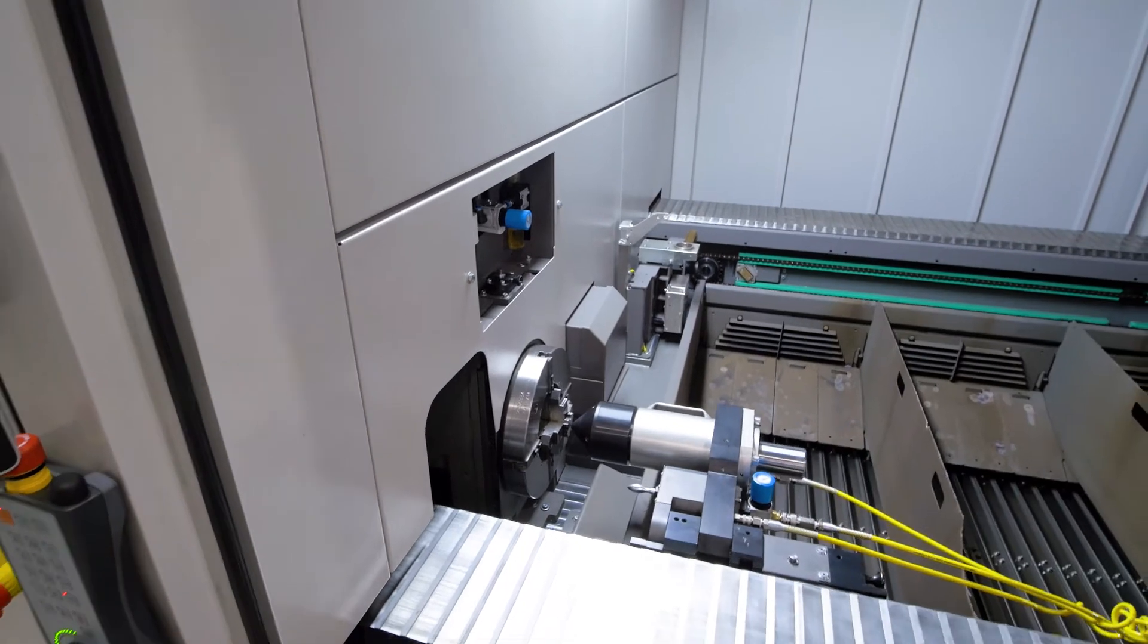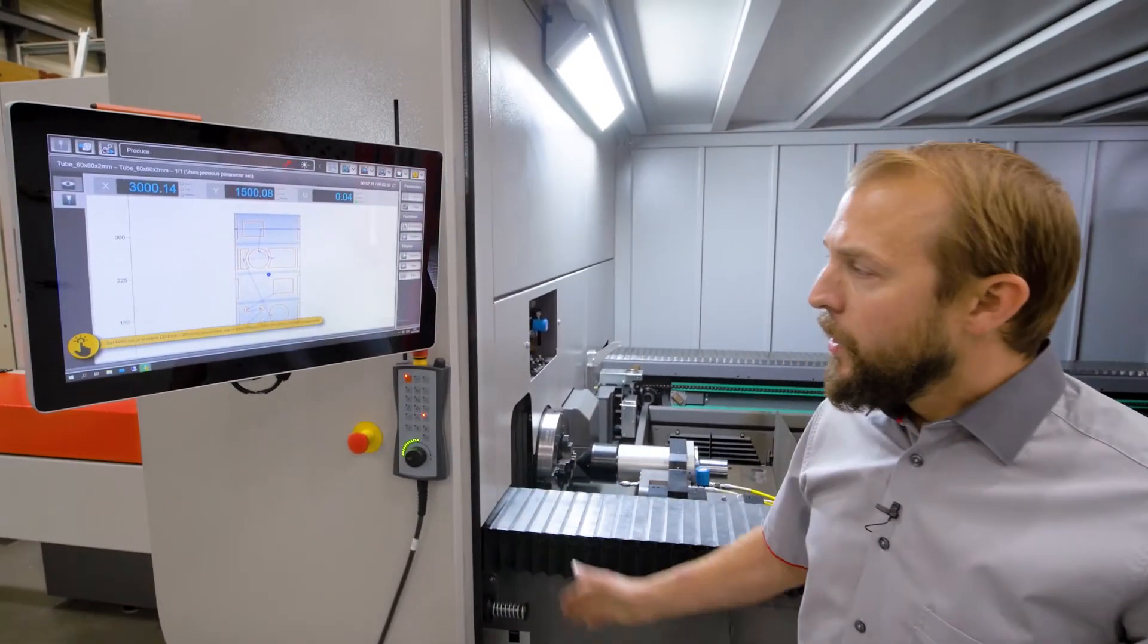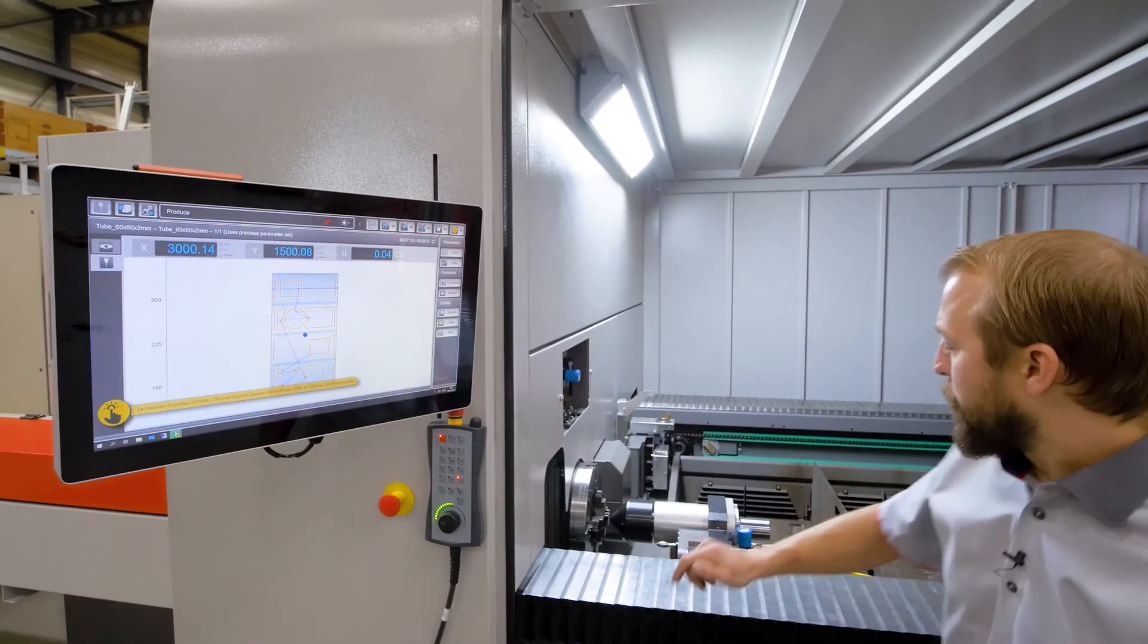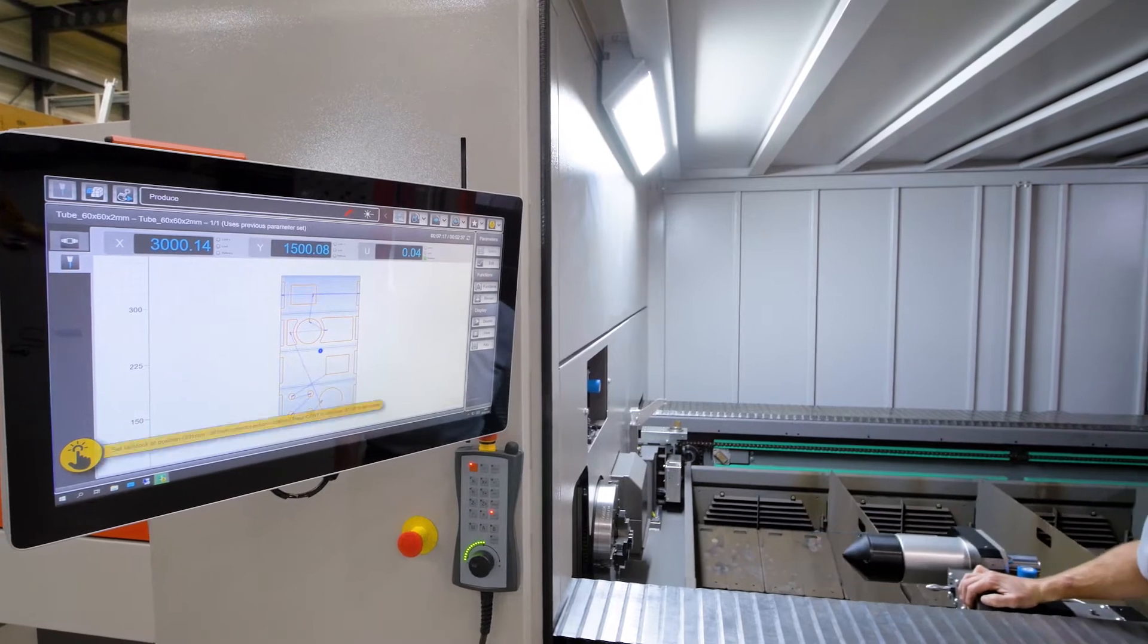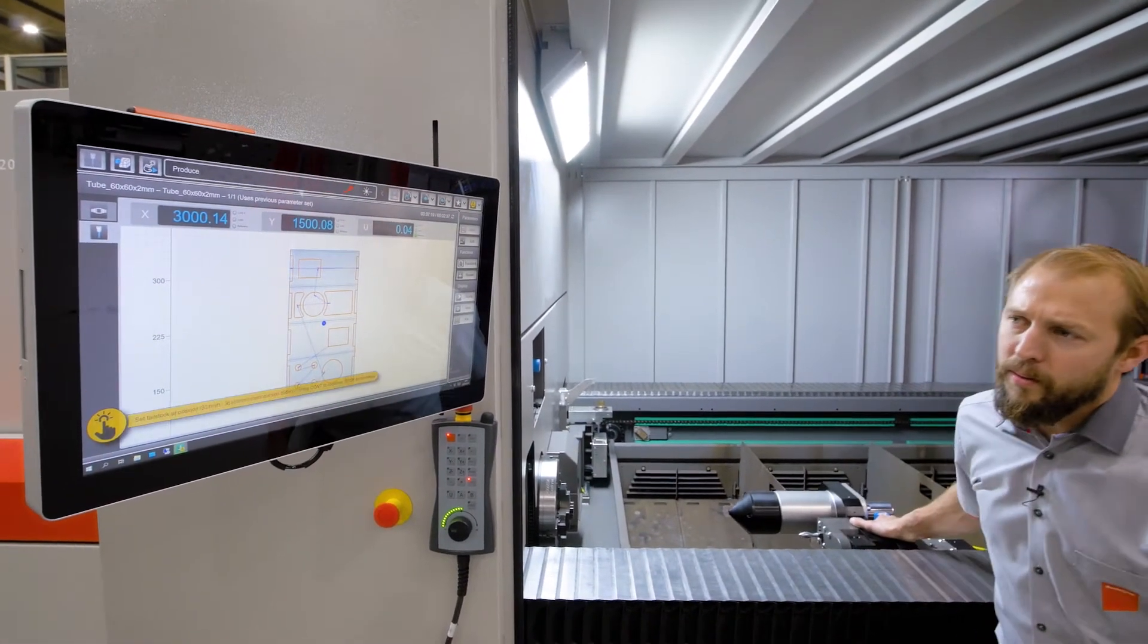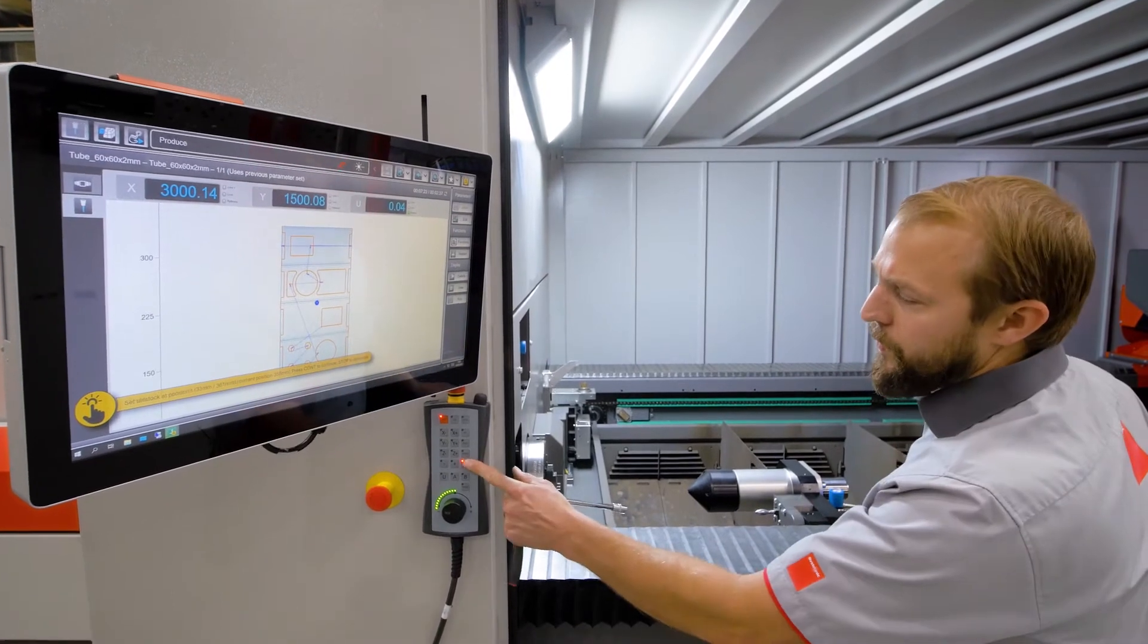Like this, that's perfect. We are in correct position. Now the machine is telling us which position in X to put the tailstock. We are moving to the position here, 360. That's perfect.